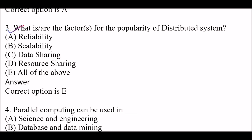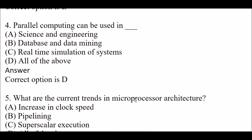Next question: what are the factors for the popularity of distributed systems? Option A, reliability; option B, scalability; option C, data sharing; option D, resource sharing; option E, all of the above. The right answer is option E, all of the above. Factors for the popularity of distributed systems include reliability, scalability, data sharing, and resource sharing.